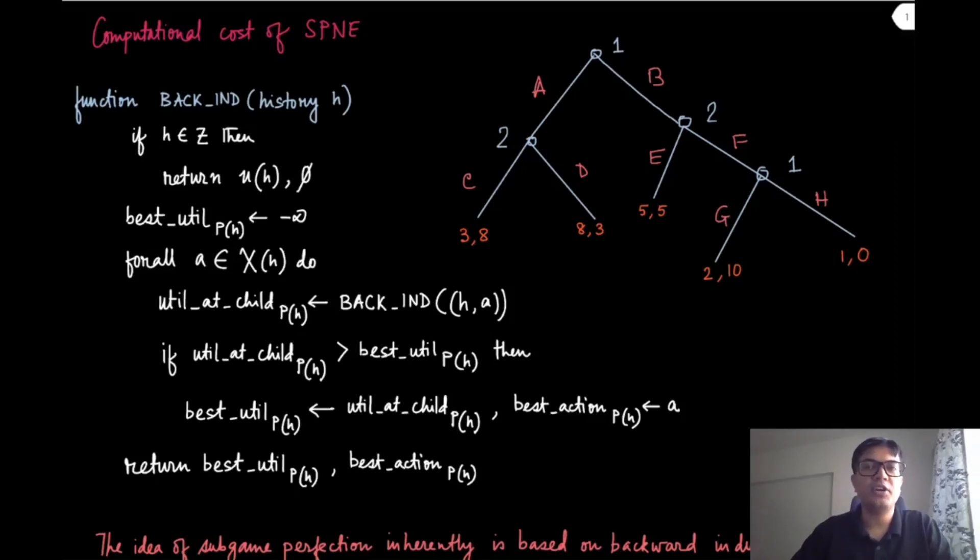We have discussed the computational complexity of several equilibrium concepts in the past. In particular, we have talked about the computational complexity of mixed strategy Nash equilibrium, and we have seen that for correlated equilibrium it's much easier. So let us look at what is the complexity for finding a subgame perfect Nash equilibrium.